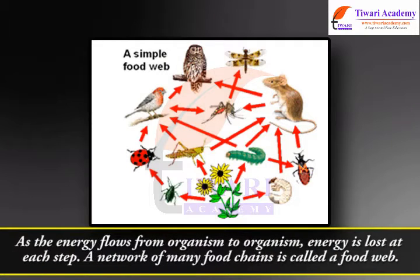As energy flows from organism to organism, energy is lost at each step. A network of many food chains is called a food web.